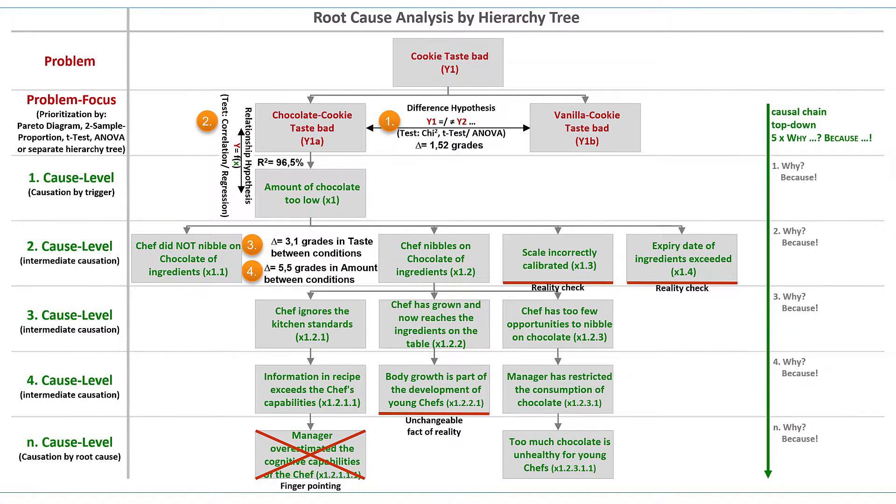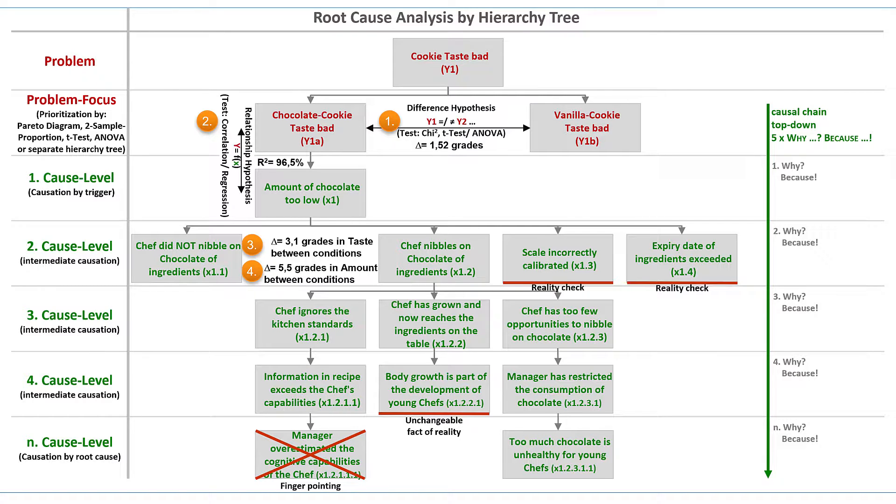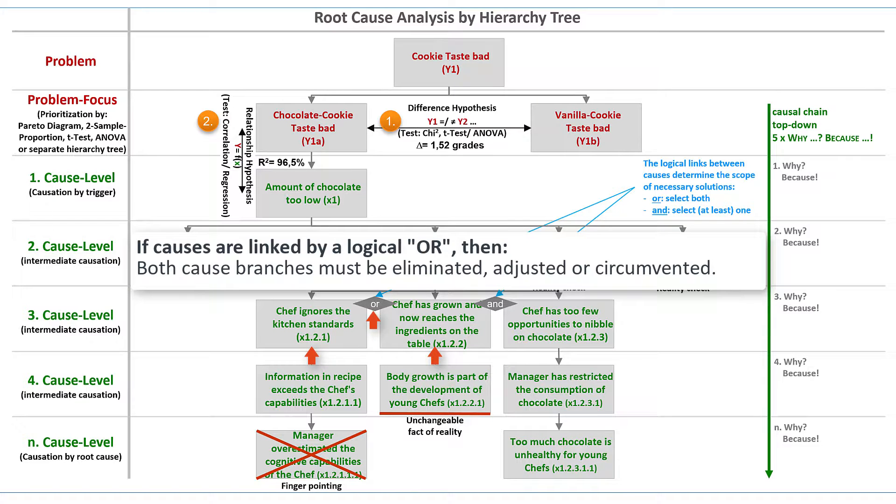It is ambitious, but sometimes useful, to additionally detect the logical connections between causes. The causes 'Chef ignores the kitchen standards' and 'Chef has grown and now reaches the ingredients on the table' are linked with the logical OR. This means that both causes can occur alternatively and in parallel to explain the loss of chocolate. If causes are linked with the logical OR, then both have to be eliminated to eliminate the problem.